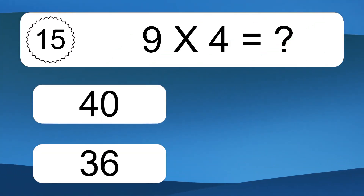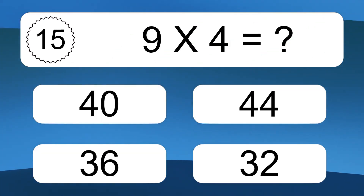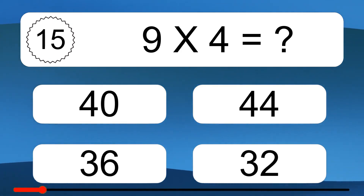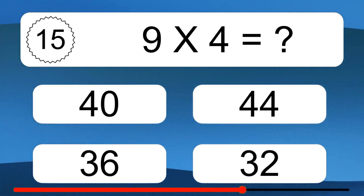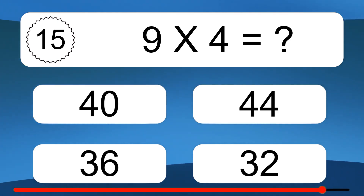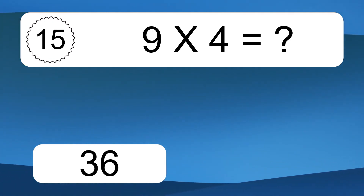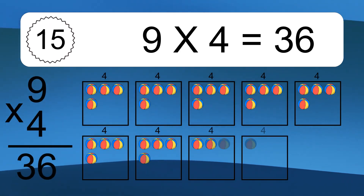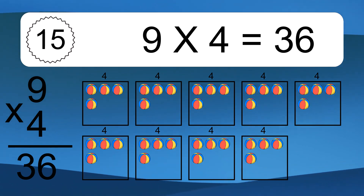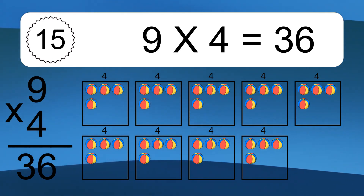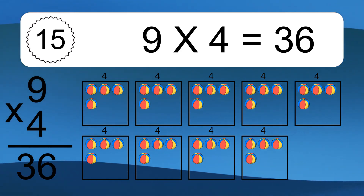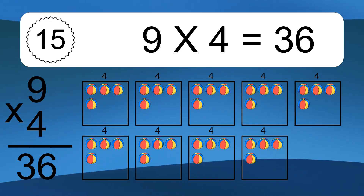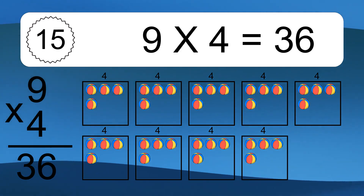9 times 4 equals what? 9 times 4 equals 36. We have 9 boxes, and each box has 4 colorful balls inside. If you count all the balls in all the boxes together, you will have 9 times 4 balls. This equals 36 balls.